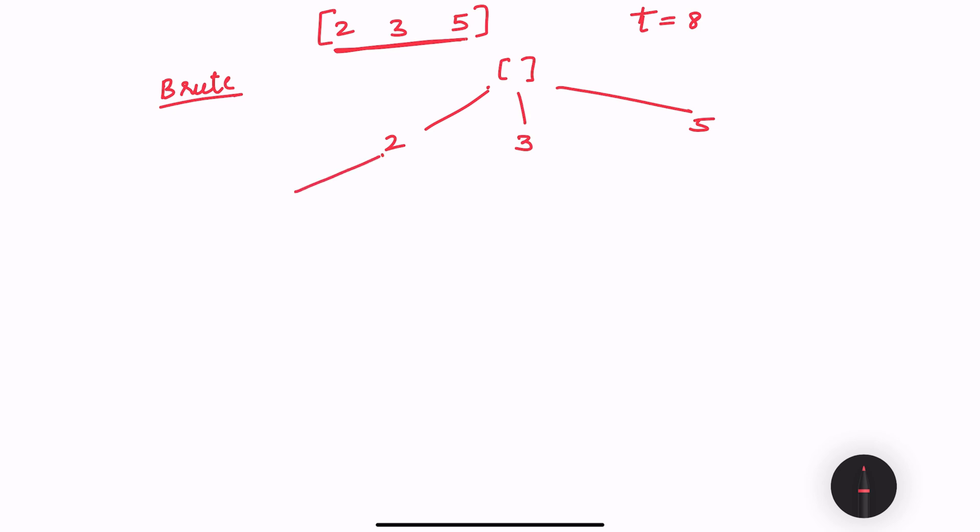So with 2 we can either add 2, either add 3, either add 5. Similarly at each layer you will keep on checking for all the possible combinations that is given to us in the candidates array.